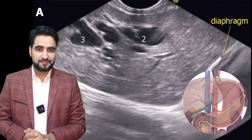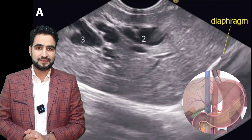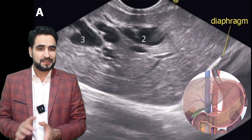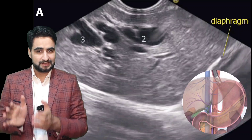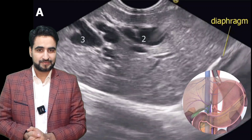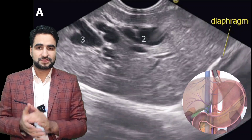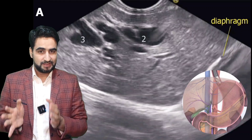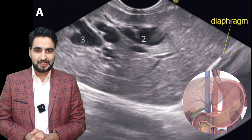Segment 2 duct appears to the right of segment 3. This is because segment 2 is anatomically placed more cranially in the liver, and thus it falls in the cranial acoustic field of the transducer, which is represented on the right side of the EUS image.